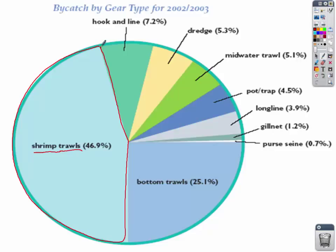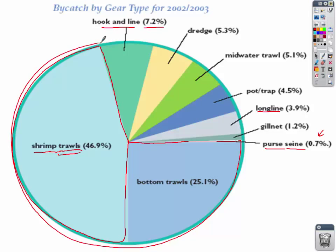Here's the purse seine net — it might be a small number, but most of that is all dolphin. Long line is a big chunk as well. If you take trawling nets, you have most of our bycatch — over 70% of all bycatch comes from trawling nets. That's one of the reasons why trawling nets are so destructive.